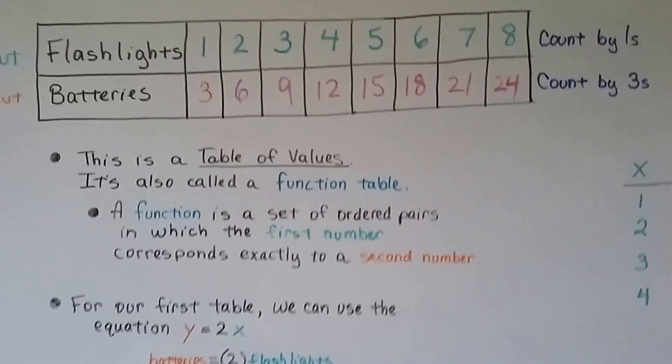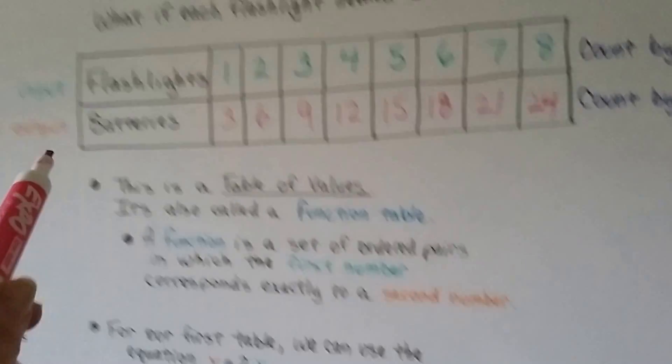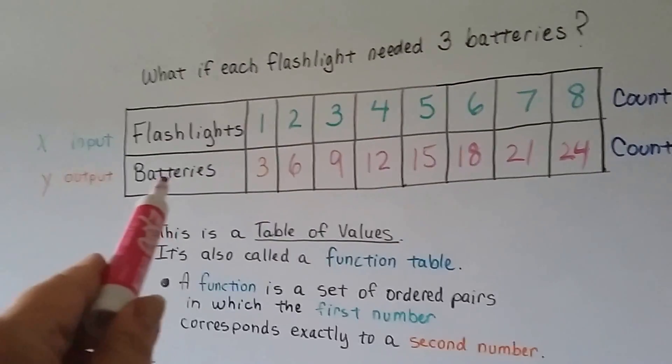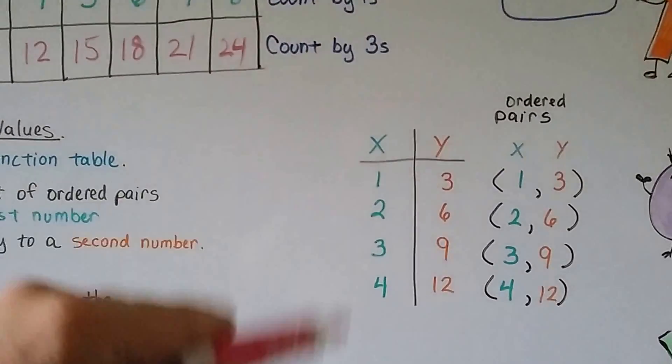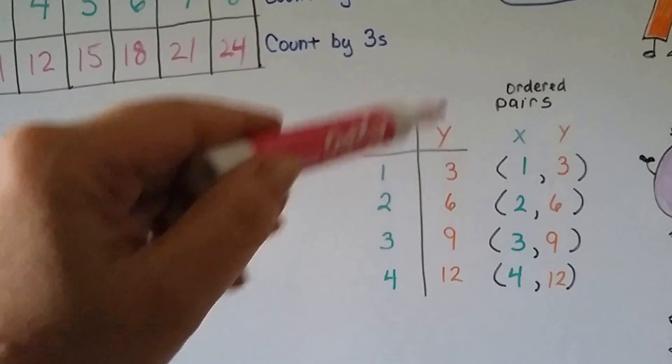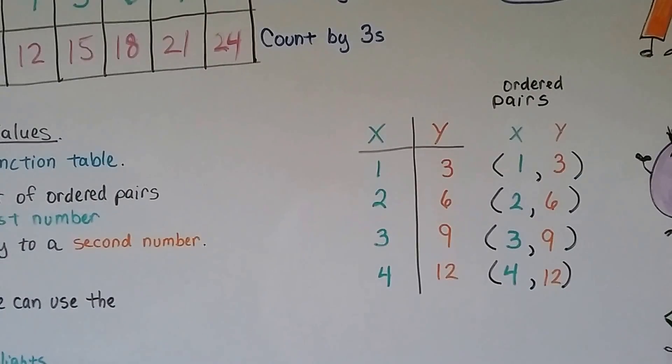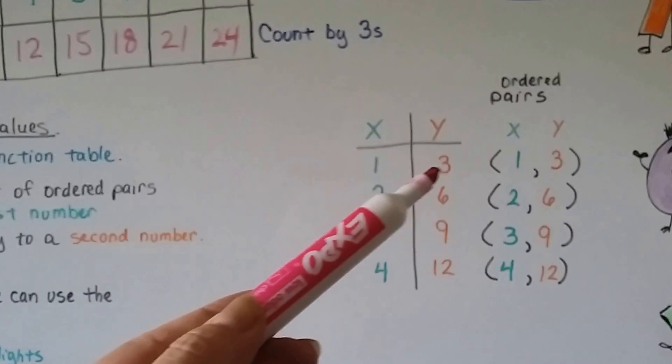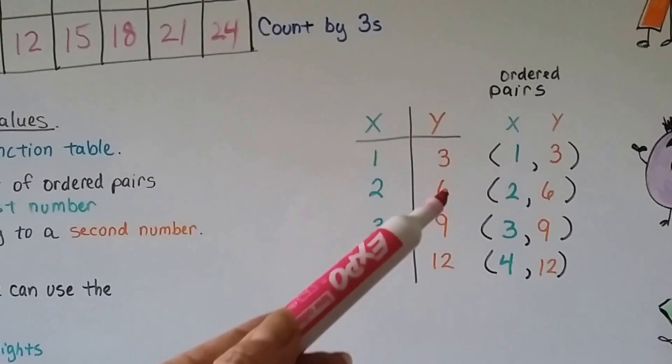Now, these ordered pairs that they talked about, we know that the flashlights are X and the batteries are Y. We can even make the table going vertical like this. And here are X values and here are Y values. One flashlight would be three batteries. Two flashlights would be six batteries.